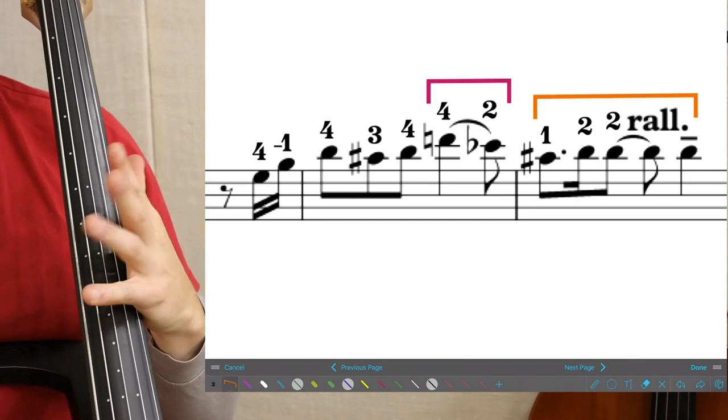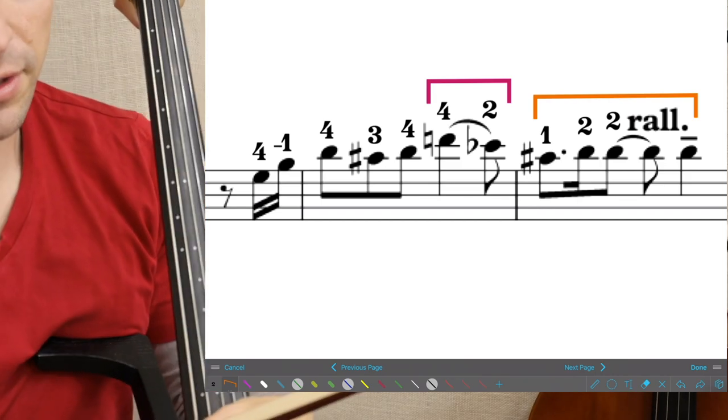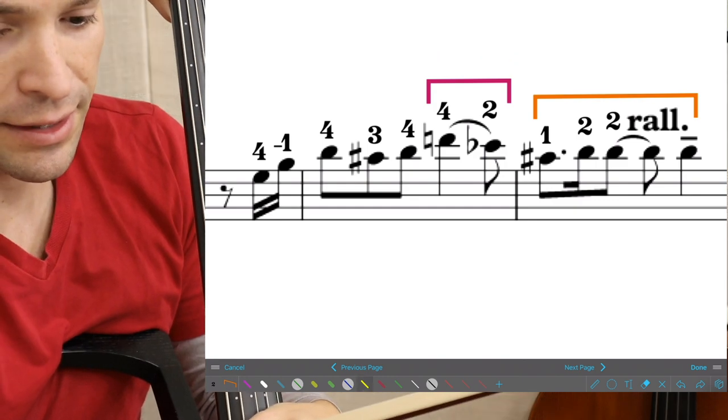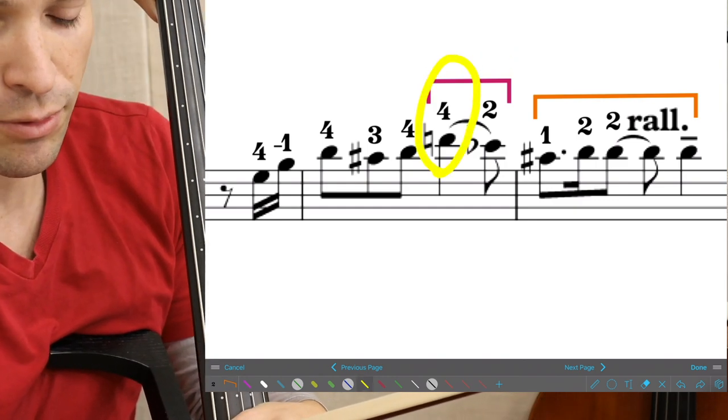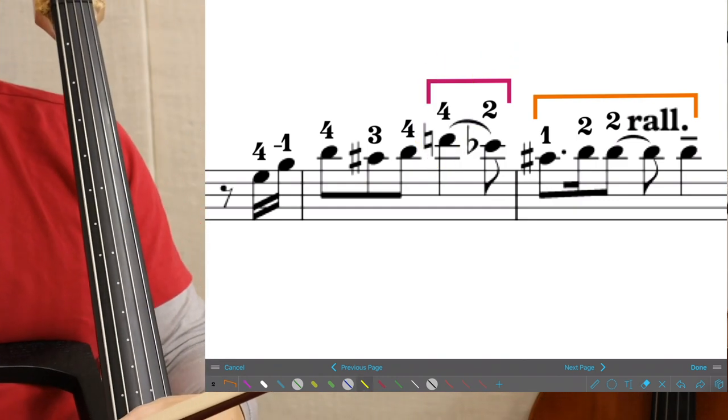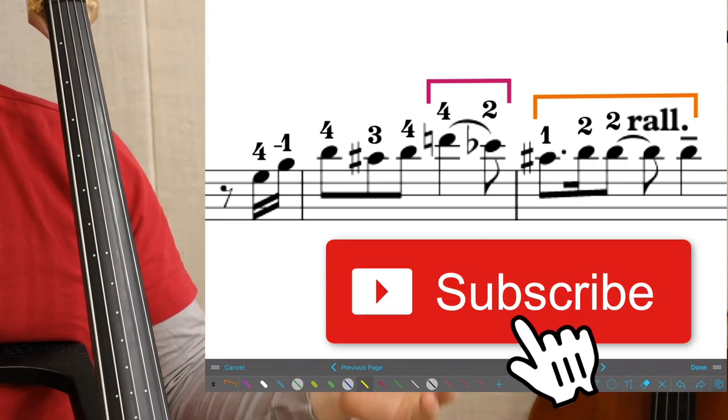You have a passage of notes in front of you and you are unsure with the fingering right here. You're looking at this, it says, well, it's an F natural, but then it's a four on it.